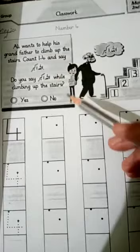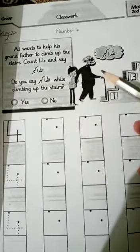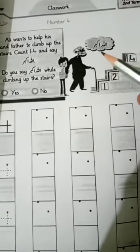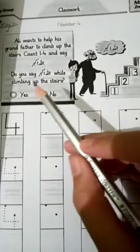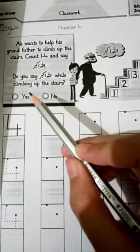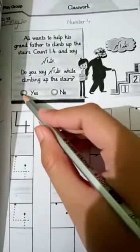Ali jo apne grandfather ki, dada bu ki help kara hai, seedhiyan charhne mein. Or seedhiyan charhte huye kya kehna chahiye? Allah Hu Akbar. Seedhiyan charhte huye Allah Hu Akbar kehna chahiye. Do you say Allah Hu Akbar while climbing up the stairs? Yes, yes I say Allah Hu Akbar.